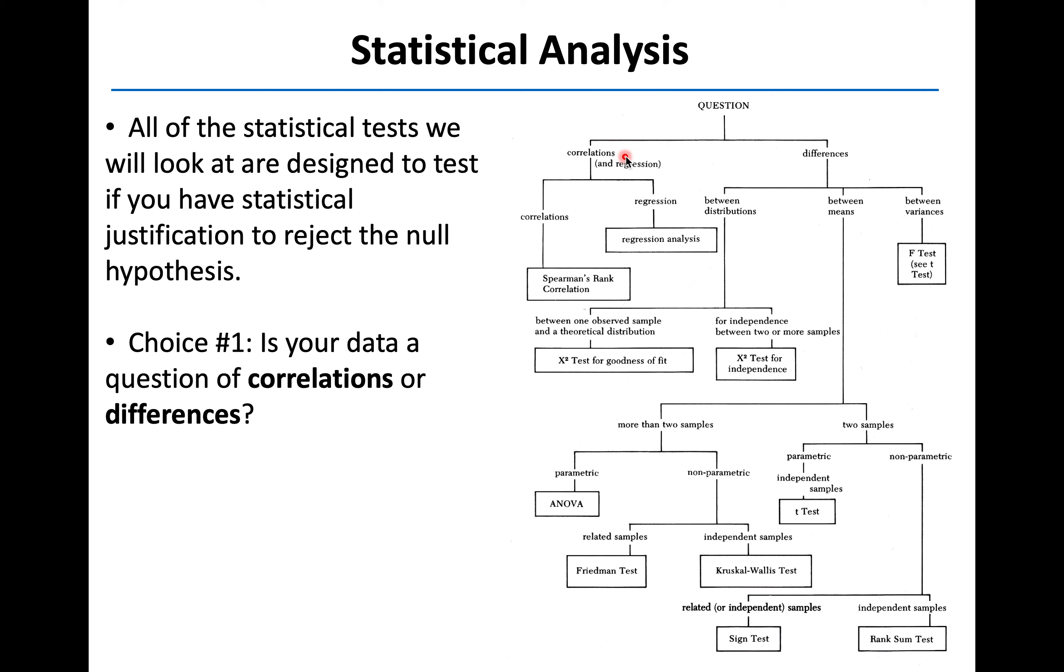If it's a matter of correlations, then that's going to lead you to using either regression analysis or the Spearman's rank test. If it's a matter of differences, then we need to ask, is this a difference between distributions? If that's the case, that will lead us to a chi-squared test. Is it a difference between variances? If that's the case, it will lead us to an F-test. And if it's a difference between means, then we have to ask a few more questions. How many samples do we have? Is our data parametric or non-parametric? There's a handful of tests down here that would be appropriate depending on how we answer those questions.